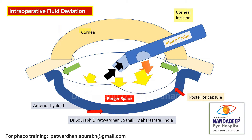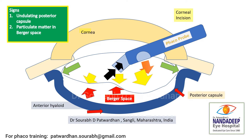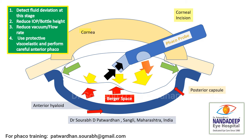The fluid keeps accumulating in this space and subsequently there will be anterior push of the posterior capsule. Because there is fluid on both sides of the posterior capsule and it is no longer supported by the anterior hyloid, the posterior capsule becomes more redundant and there will be an undulating posterior capsule. You can also see some particulate matter or debris in the Berger space, indicating that the anterior hyloid has now separated from the posterior capsule. It is important to detect fluid deviation at this stage.